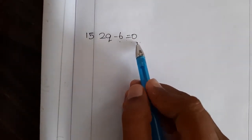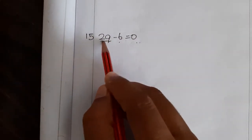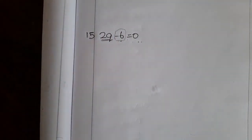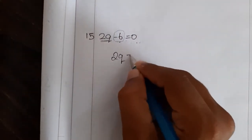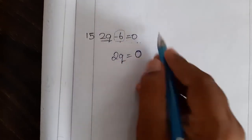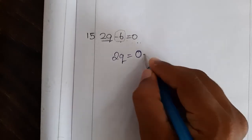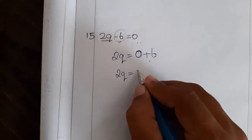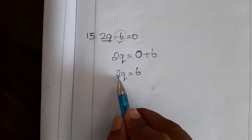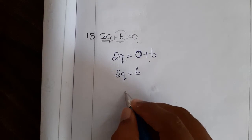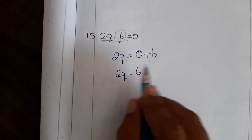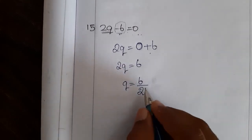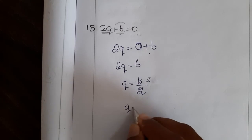Next problem: 2q minus 6 is equal to 0. It is the same — 2q is with the variable and the number. Don't disturb it first. First you just transpose the term which has only a number. So 2q is equal to — the right hand side has 0, so 0 plus 6. Minus 6, if you transpose, it will become plus 6. So 2q is equal to 0 plus 6, which is 6. Now the 2 and q are multiplied — 2q means 2 into q. Let me transpose 2. It is multiplication, so while transposing it will become division. So q is equal to 6 divided by 2, which is 3.